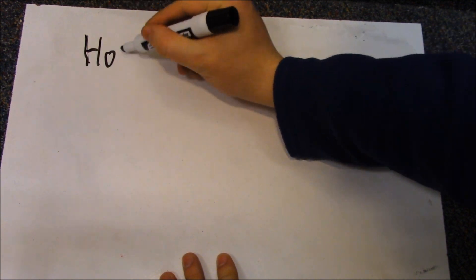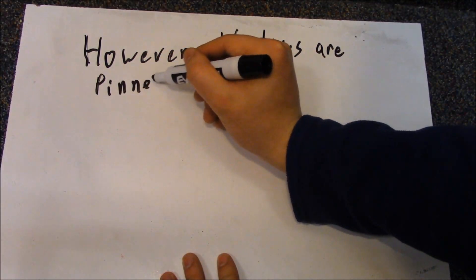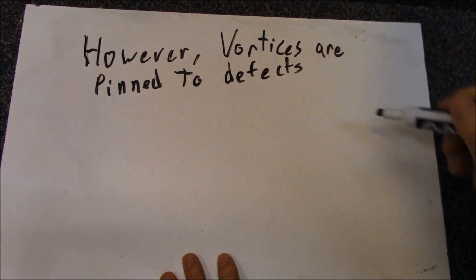This assumes that the Type 2 superconductor is perfect. They actually have defects, and vortices get pinned to them. Here is a quick diagram.